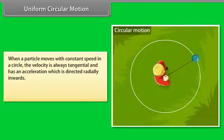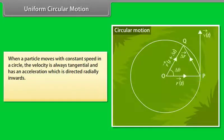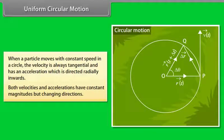When a particle moves with constant speed in a circle, the velocity is always tangential and has an acceleration which is directed radially inwards. Both velocities and accelerations have constant magnitudes but changing directions.